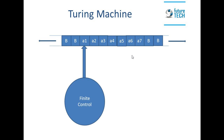A Turing machine consists of an infinite tape that contains the tape symbols, which are initially the inputs for the Turing machine. The cells contain input symbols — here you can see it's from A1 through A7. B corresponds to blank cells. There is a finite control that reads these input symbols, and the head of this finite control can move in either direction, to the right or to the left.